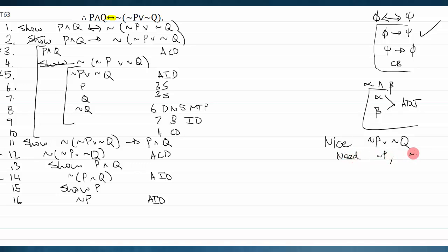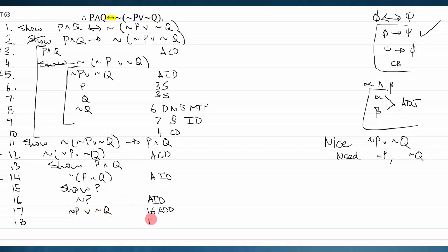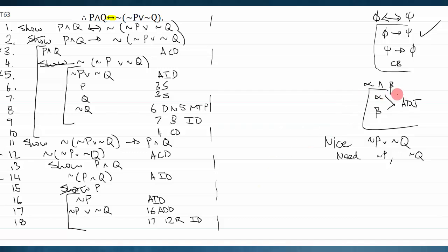Since I have not-p, I can immediately add to it anything I want in the form of a disjunction, getting 'not-p or not-q' via the addition rule. Now 'not-p or not-q' is the opposite of line twelve — 'not (not-p or not-q).' So line twelve repeated and line seventeen give me an indirect derivation contradiction, and I've successfully shown p. This was proof structure and a contradiction generator built into one nice move.